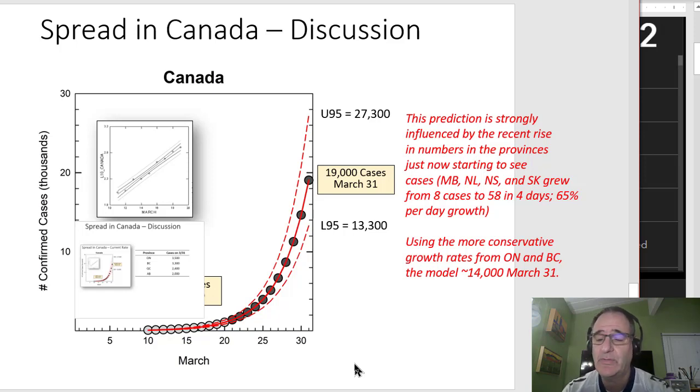If we use the more conservative growth rates from Ontario and BC where the epidemic has been established longer, instead of 19,000 cases, we would predict something closer to 14 to 15,000 on the 31st and the error bars shift down some. So I'm not sure we're going to get to 19,000 cases. It can go either way. If this acceleration we're seeing in some of the other provinces is real then we're going to have a lot of cases. If the acceleration is an artifact of discovery of first clusters and testing, it's possible that there will only be 14,000 cases in Canada in 10 or so days.